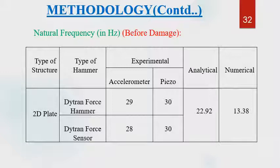These are the results obtained using different excitations and both sensors experimentally, compared with analytical and numerical results. The experimental results did not vary much; however, they varied a little from analytical and numerical values, and the reason has already been explained during the case of the beam.